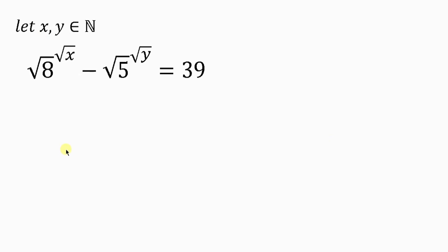Welcome back to my YouTube channel. Look at these lines and the beautiful question we have here on the board that we're going to be solving. The question says: for all natural numbers x and y, the square root of 8 to the power of the square root of x, minus the square root of 5 to the power of the square root of y, is equal to 39.